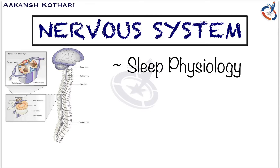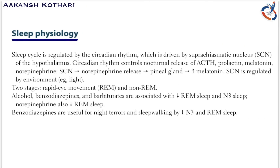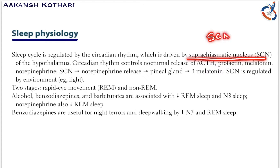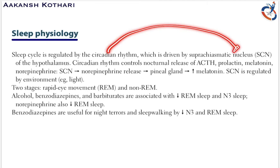Welcome to the module on the nervous system. In this module we will talk about one of the most important and high yield topics of nervous system physiology — sleep physiology. The sleep cycle is regulated by circadian rhythm, which is derived by the suprachiasmatic nucleus, abbreviated as SCN.